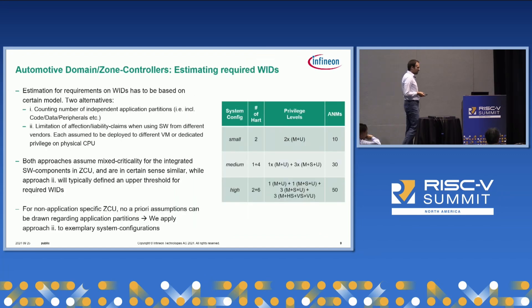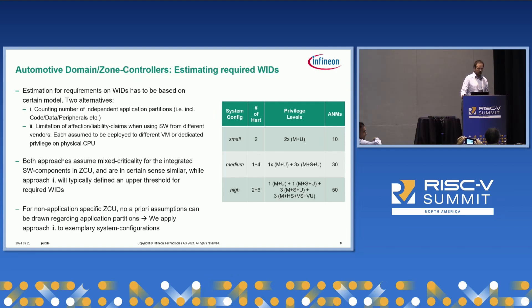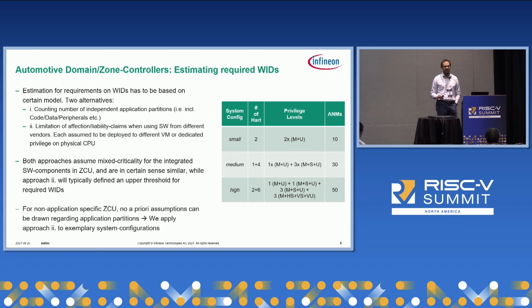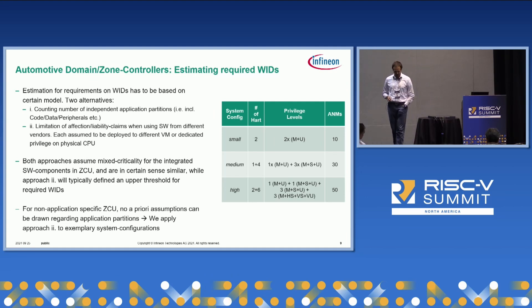If I am trying to integrate several applications into a single zone controller, I need to form logical islands of functionality which cannot intersect with each other. In a WorldGuard approach, this would be mapped to World IDs. In other approaches it would be another ID, but we choose WorldGuard as we think it is most suitable for ZCUs that are particularly oriented or positioned in a real-time domain. The question we need to answer is: how many of these IDs do I actually need?